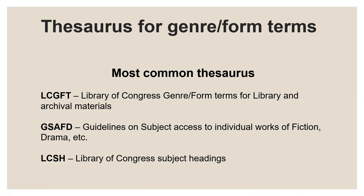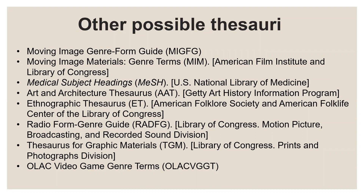There are many thesauri you might see. The ones we use most often will appear as 655s for the LCGFT — the Library of Congress Genre Form Terms for Library and Archival Materials. You may also see terms in the GSAFD — the Guidelines on Subject Access to Individual Works of Fiction, Drama, etc. — and you may also find some in LCSH, the Library of Congress subject headings. This is a list of some of the other possible thesauri that you might find in your record, which are certainly available to you if your LSAP agrees to have these within your catalog.